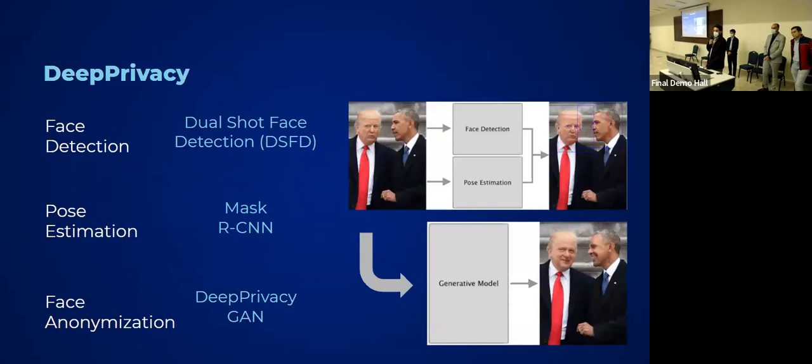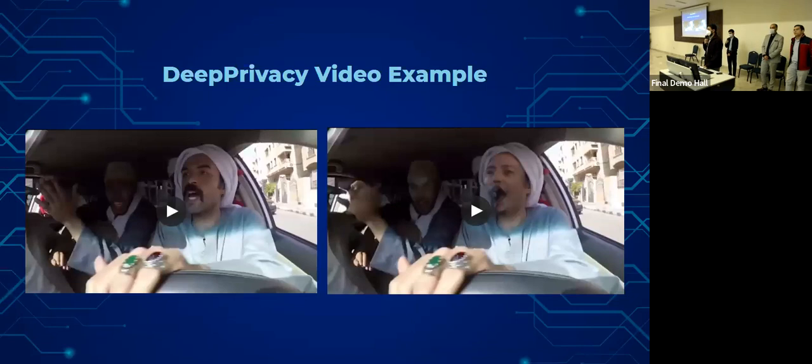Before I discuss the example, this is sort of a high level snapshot of the deep privacy architecture that we use. It uses face detection and pose estimation to basically identify where the face is located, and that feeds the location to a generative model that transforms the face and obscures the subject's identity. These are examples for the deep privacy model before and after.